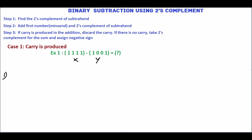First we have to find the 2's complement of Y. For this, first find the 1's complement. To find 1's complement, just change all 1's to 0 and all 0's to 1. So 0 will become 1, 1 will become 0. The result 0, 1, 1, 0 is the 1's complement.